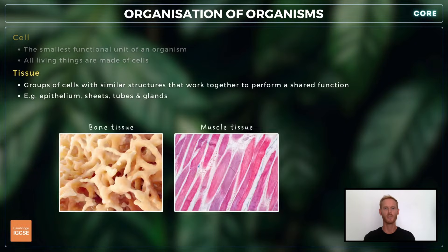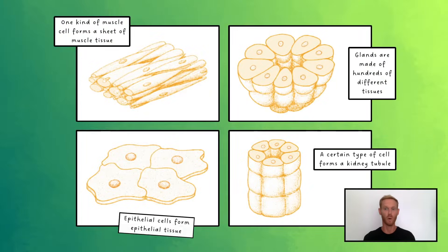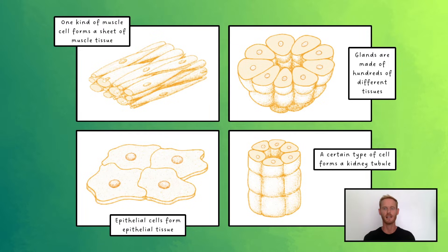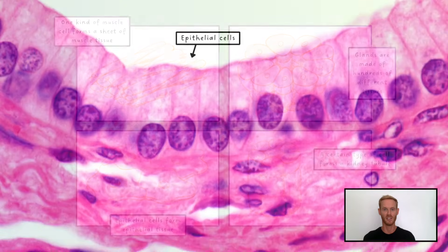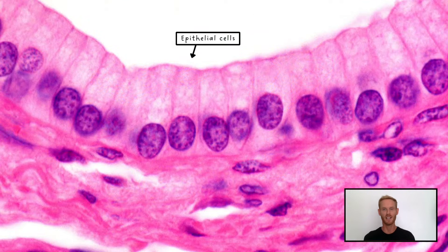Tissues are groups of cells with similar structures that work together to perform a shared function. For example, one kind of muscle cell forms a sheet of muscle tissue which is capable of contracting, while epithelial cells form an epithelium, which is a thin layer that lines the surfaces of the body, like the inside of the mouth, windpipe and intestines.